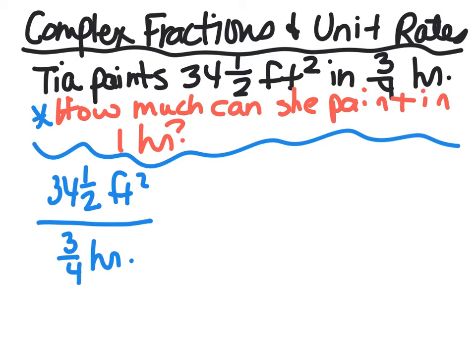We want that to be a unit rate of 1, so we need to change this. So I'm going to change this right away. 34 1/2 is - 34 times 2 is 68 plus 1 is 69 halves.